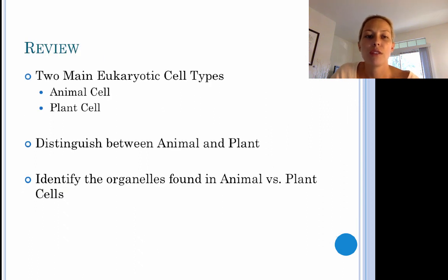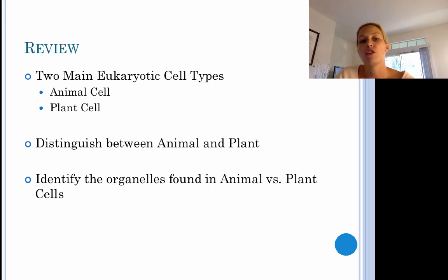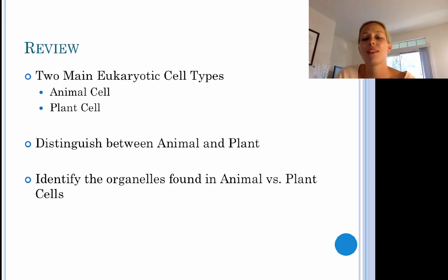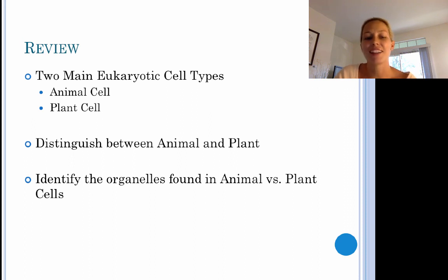To review: you should be able to tell the two main eukaryotic cell types — plant cells and animal cells. You need to be able to distinguish between plant and animal cells and identify the organelles found in each. Good luck!